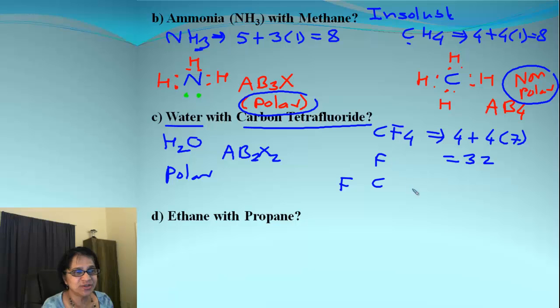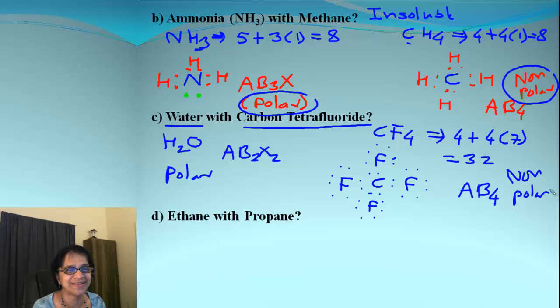And then, when we have Lewis dot structure, what do we end up getting? We end up getting all octets complete. And then, how many are remaining? It's 8 around each fluorine. That means we used up all 32, so nothing is remaining. Which makes the ABX formula as simply AB4. There is no X, no electron pair, and also it's a symmetrical molecule, which makes it non-polar. If it is non-polar and this is polar, this will be insoluble.